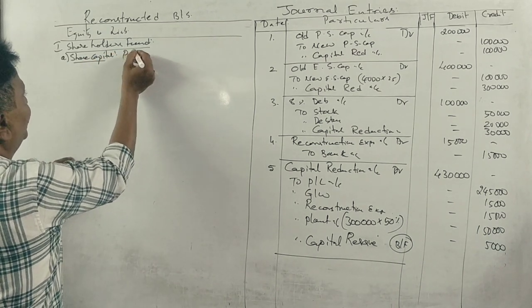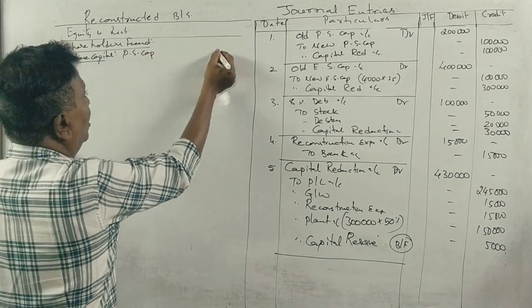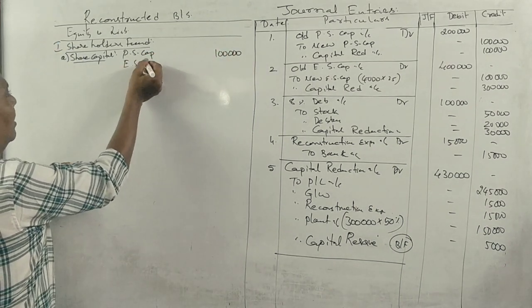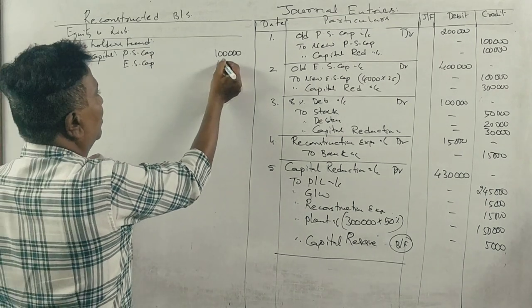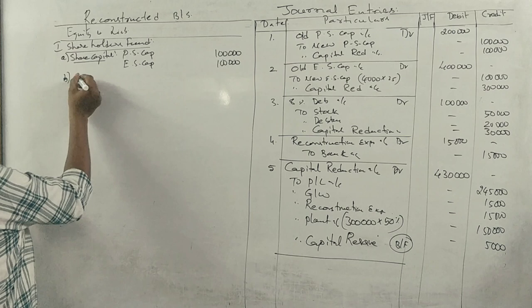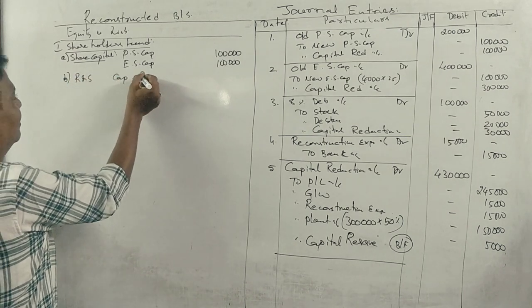Preference share capital 1 lakh, equity share capital 1 lakh. Total is 2 lakhs. Next, reserves and surplus - capital reserve.